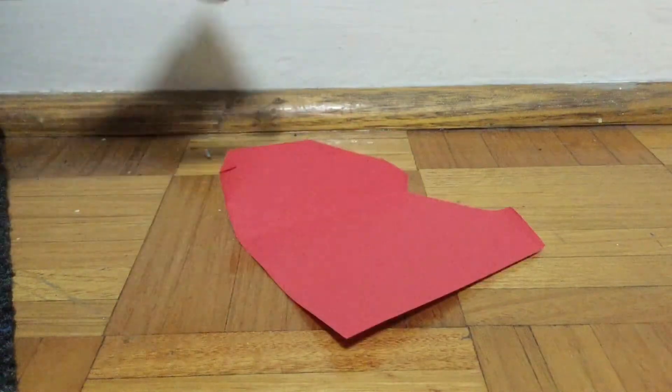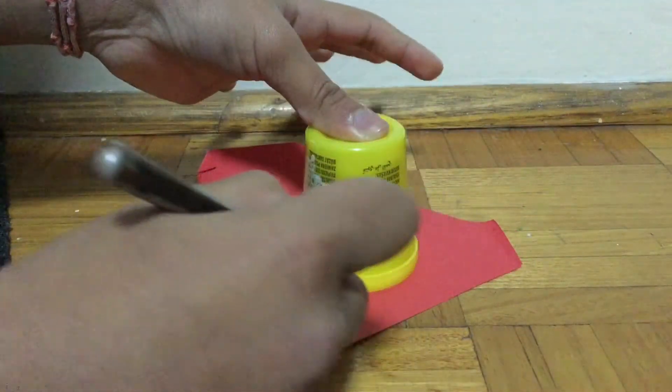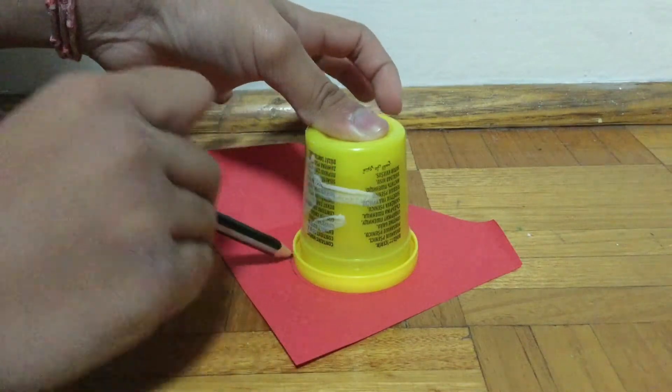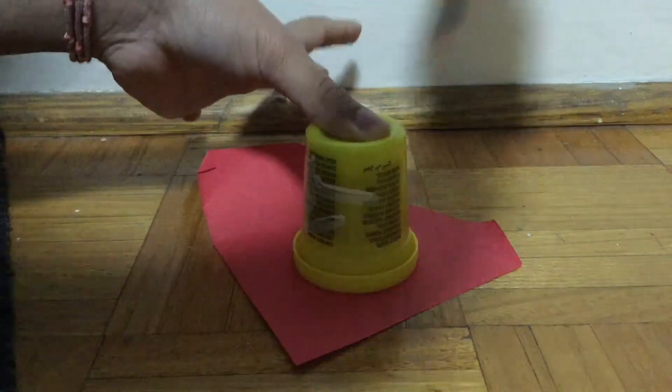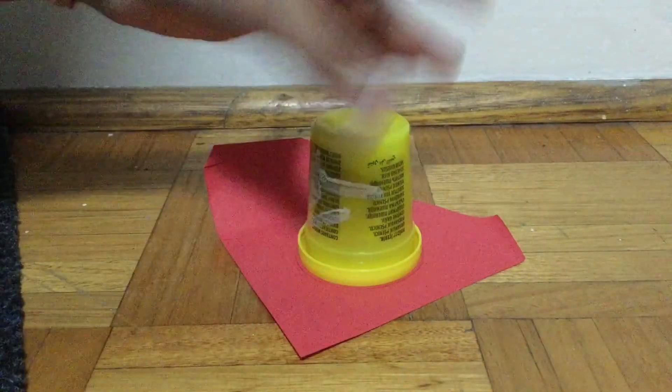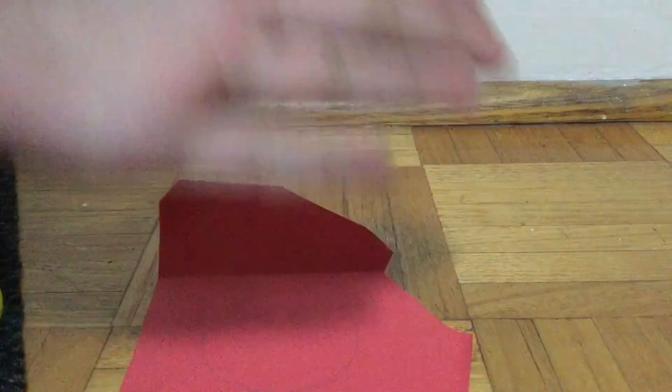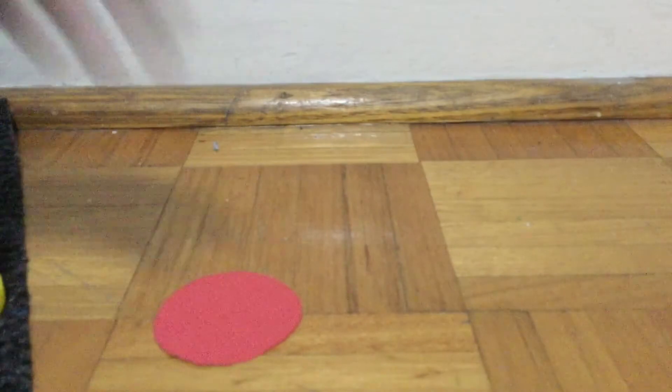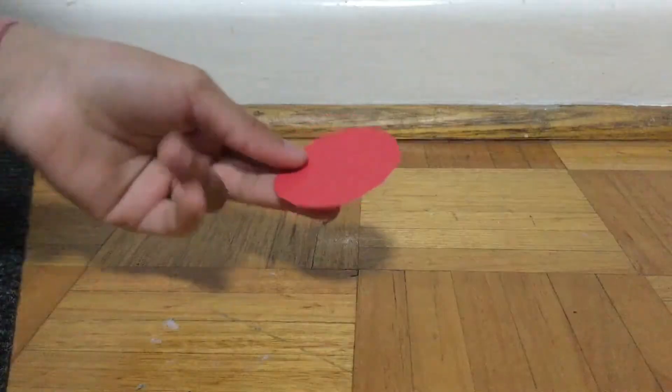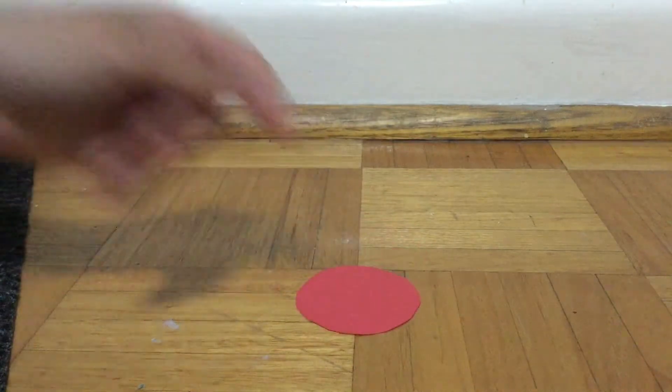To make the roses, take a colored sheet and make circles. You need to make nine, but one of them has to be bigger. So now cut the circle. Okay, so now we are going to, not cut it actually.